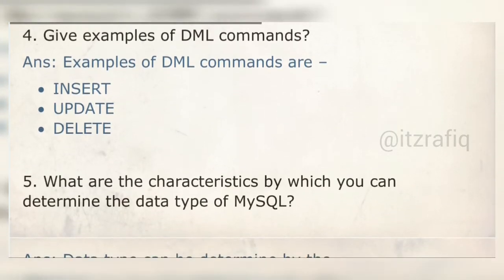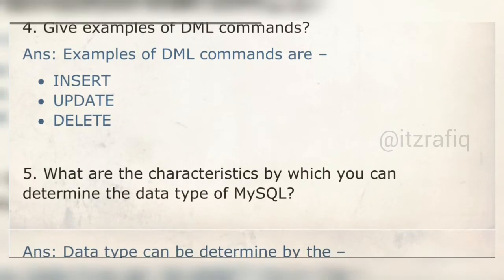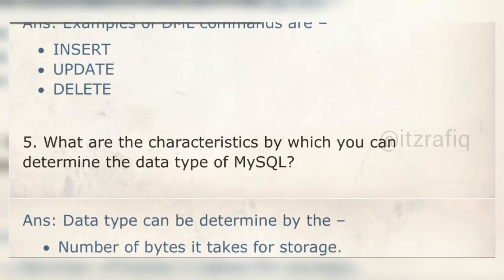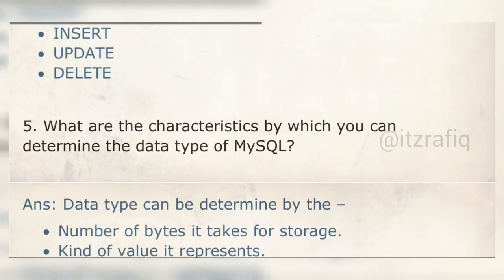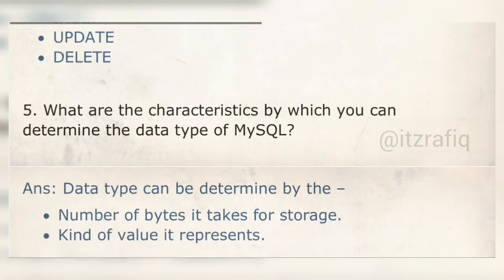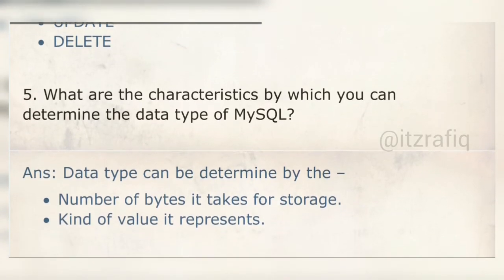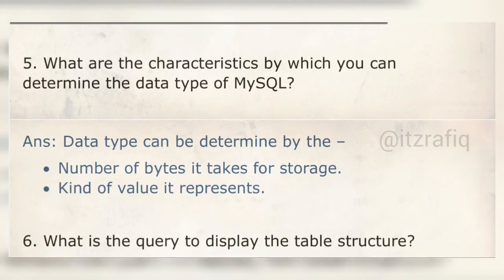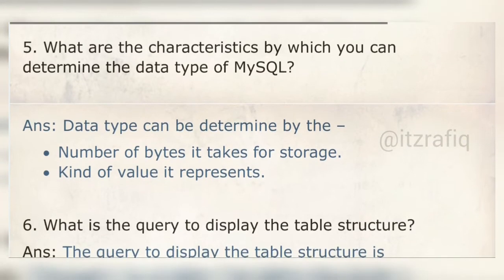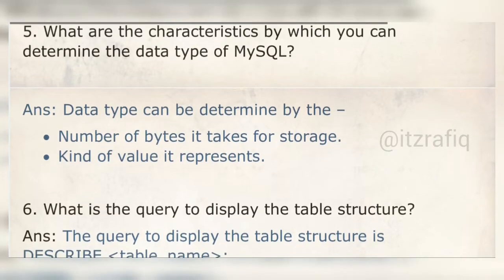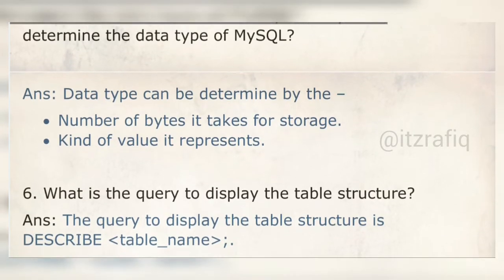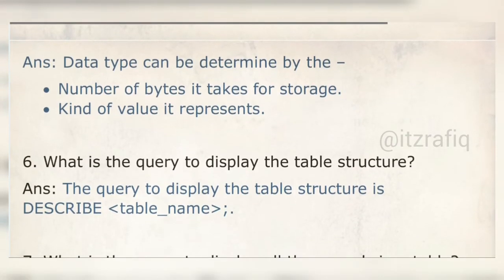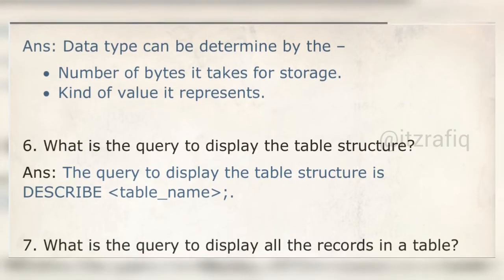Give examples of DML commands: INSERT, UPDATE, and DELETE. What are the characteristics used to determine the data type in MySQL? First: the number of bytes it takes for storage — how much space the data will occupy. Second: the kind of value it represents — what type of data it holds.